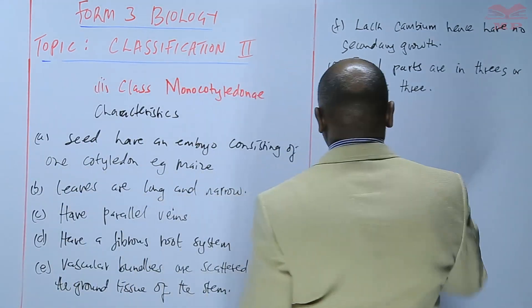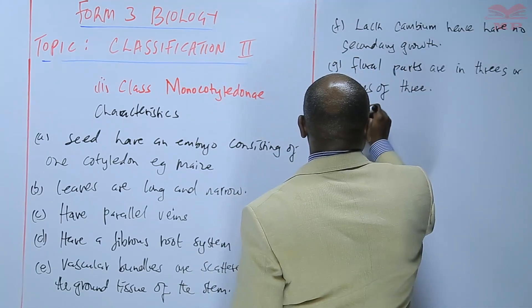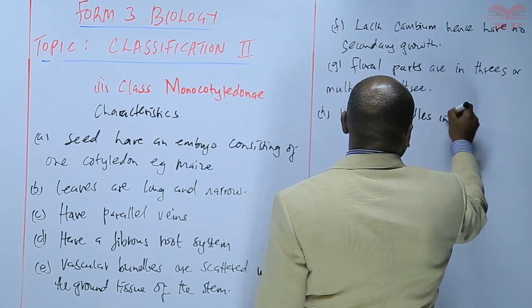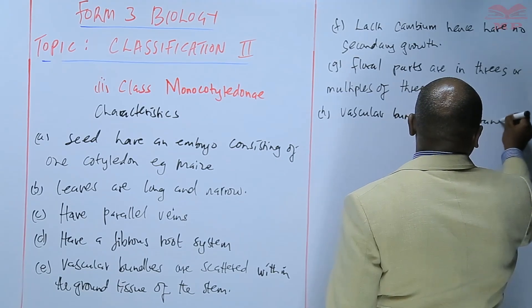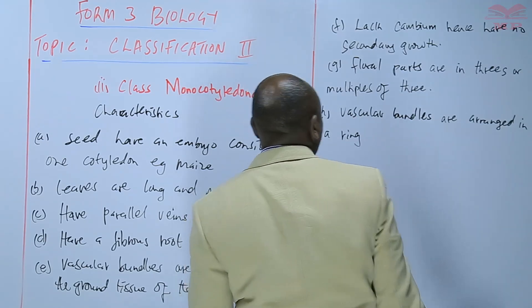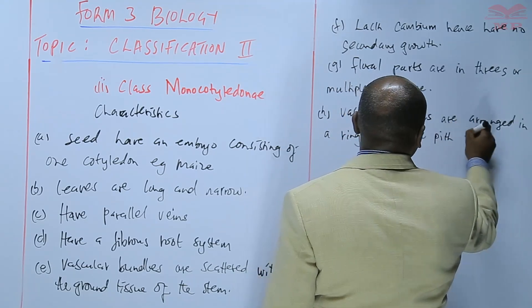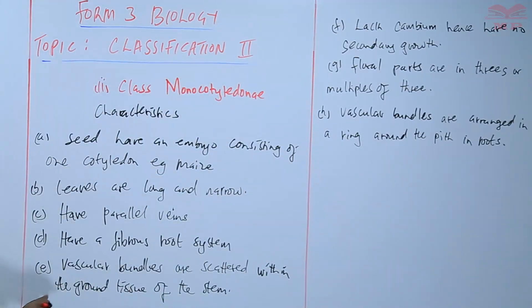In terms of the vascular bundles in the root, the vascular bundles are arranged in a ring around the pith in roots. But in stem, the vascular bundles are scattered within the ground tissue.